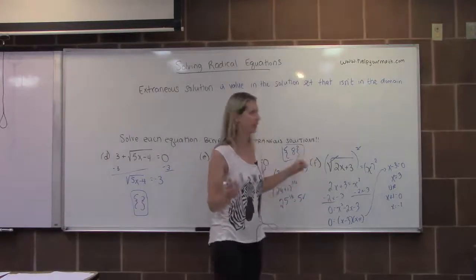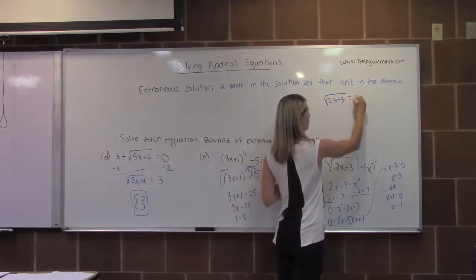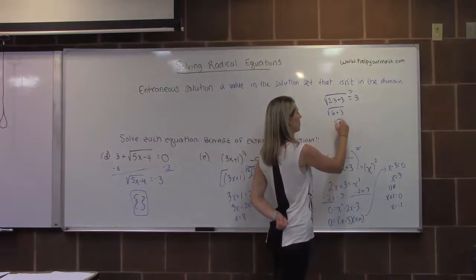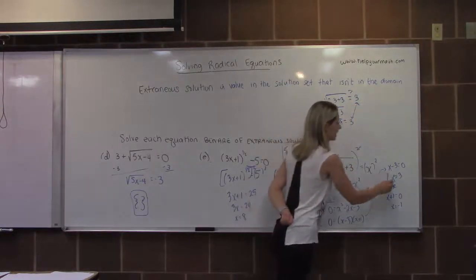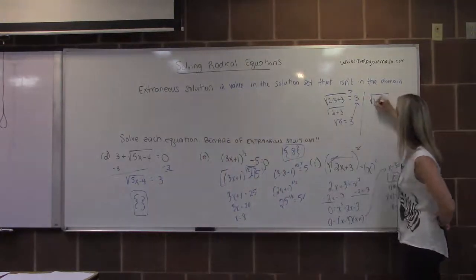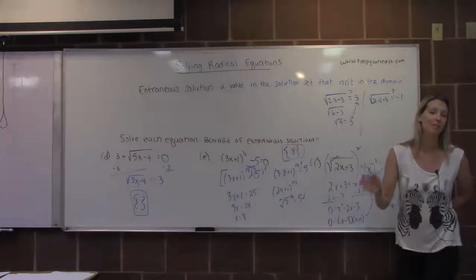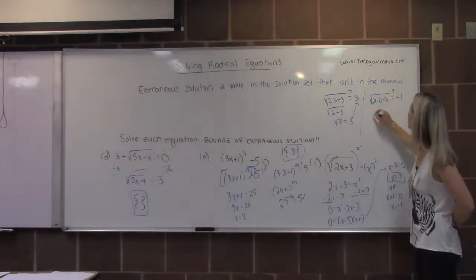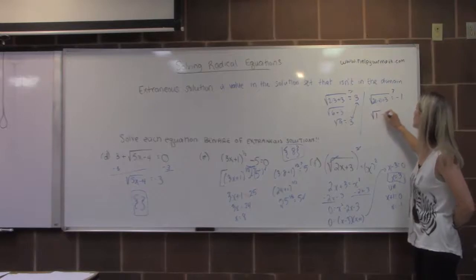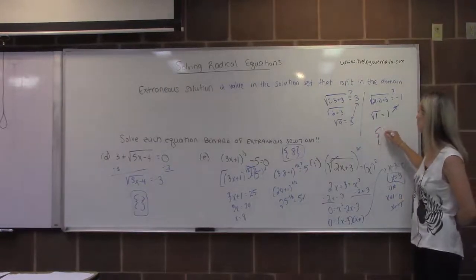Let's check x equals 3: does the square root of 2 times 3 plus 3 equal 3? Two times 3 is 6, plus 3 is 9, and the square root of 9 is 3. Yes — x equals 3 is a valid solution. Now checking x equals negative 1: does the square root of 2 times negative 1 plus 3 equal negative 1? A square root cannot equal something negative. Indeed, 2 times negative 1 is negative 2, plus 3 is 1, and the square root of 1 is 1, not negative 1. So x equals negative 1 is an extraneous solution and gets rejected. The only solution to letter F is x equals 3.